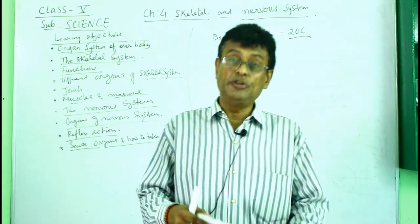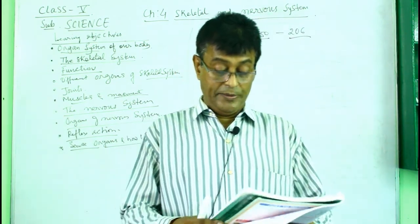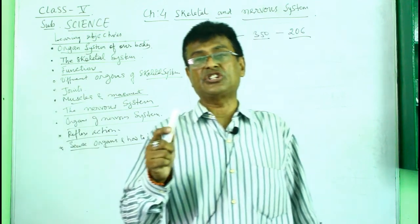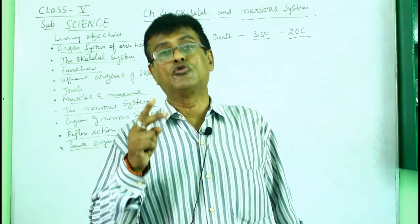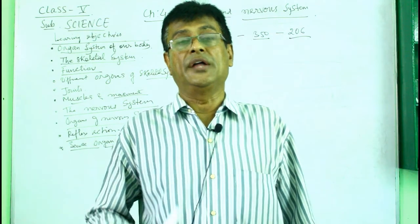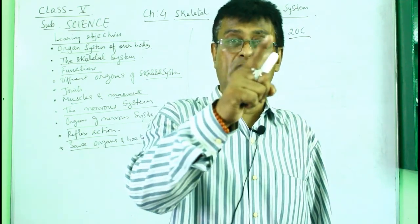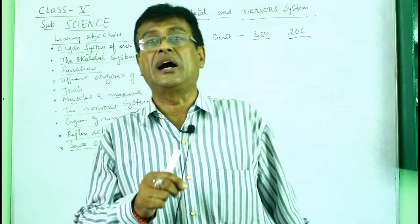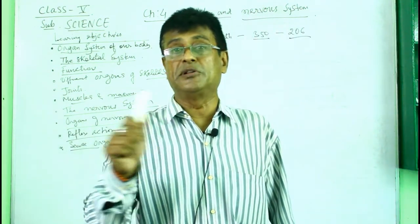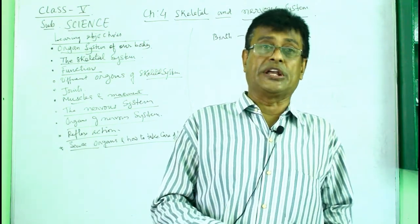We have different kinds of joints. Some joints are movable and some joints are immovable. Bones are attached with muscles to provide movement. There are two kinds of fibres: ligament connects bone to bone, and tendon connects bones to muscles. So tendon is bones to muscles, and ligament is bone to bone.